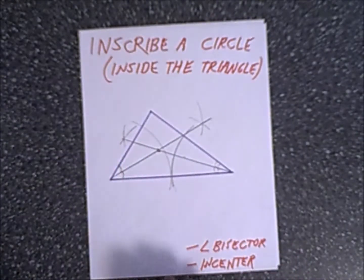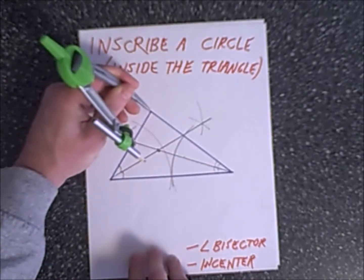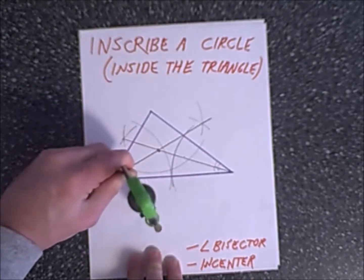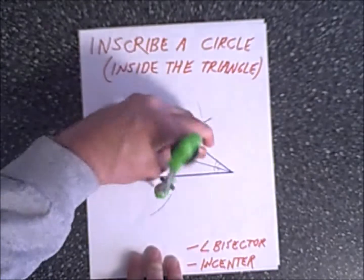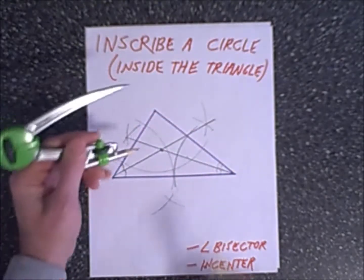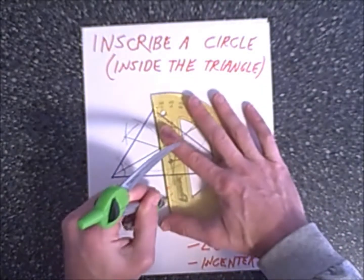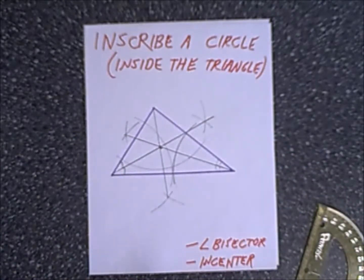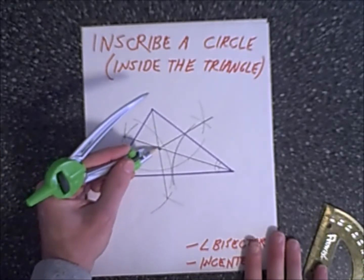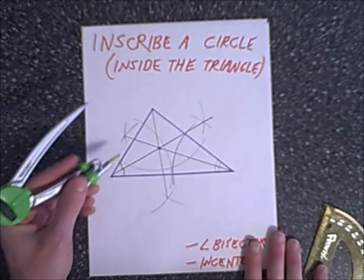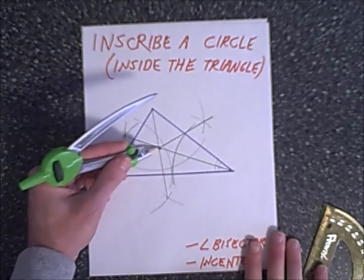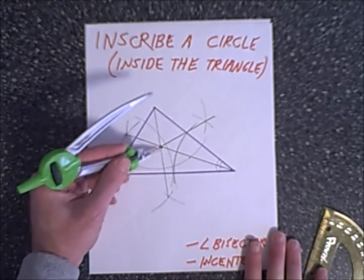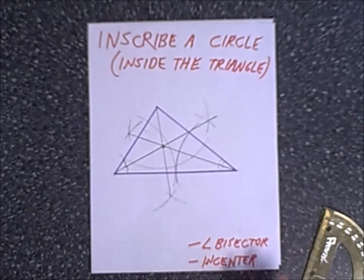We'll draw one more angle bisector just to check our work. Again, we start at the top vertex and sweep an arc through its sides. Then from each of the sides, we draw arcs that will intersect. Drawing from this intersecting point to the vertex confirms our incenter. Now we have to draw three segments from this incenter to each of the sides. The closest distance between a point and a line segment is a straight line — specifically a perpendicular line. So we need to draw a perpendicular line from the incenter to each side, and those three perpendicular lines will be equidistant.